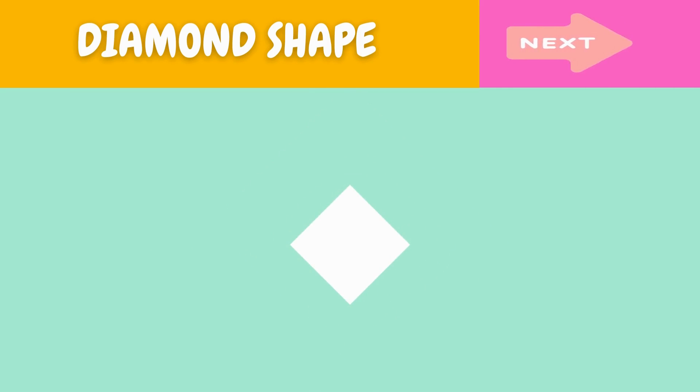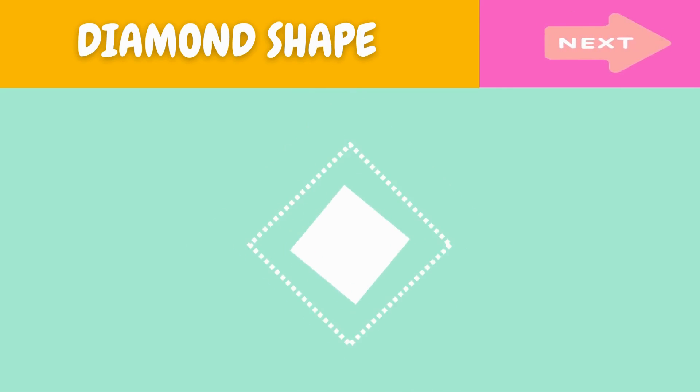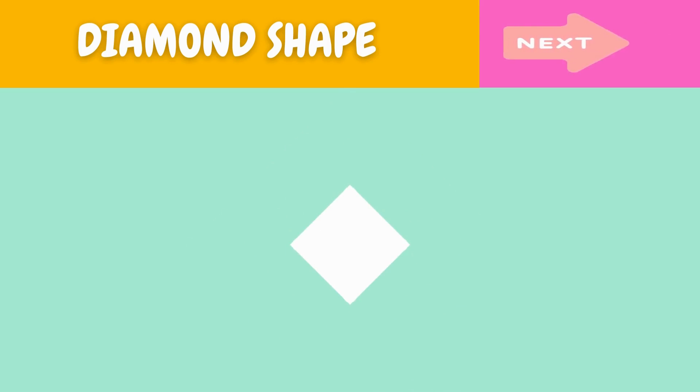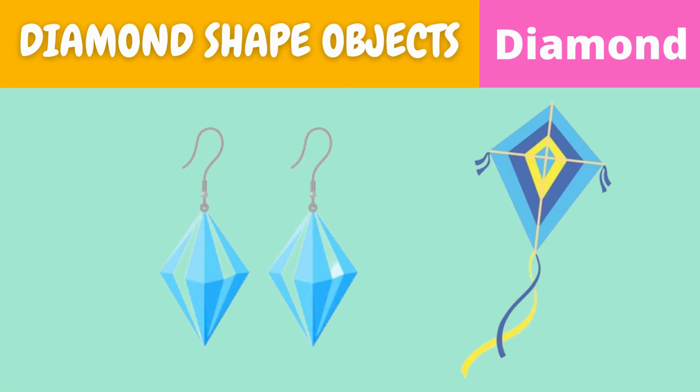This is a diamond. What is this? This is a diamond. Here are some examples of diamond-shaped objects.